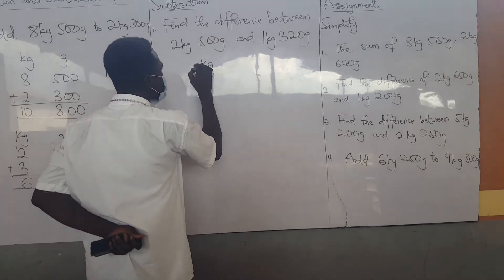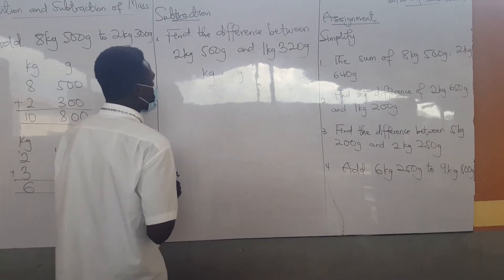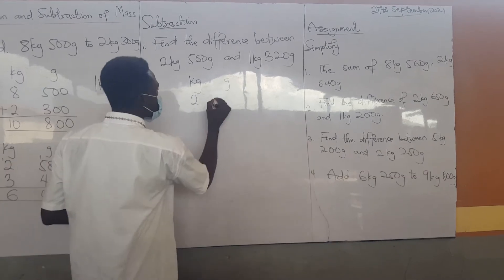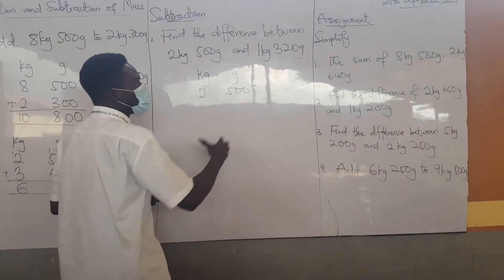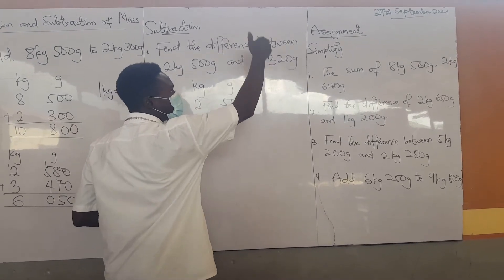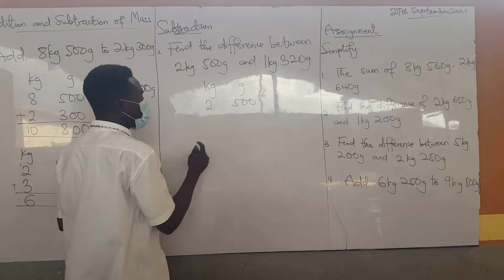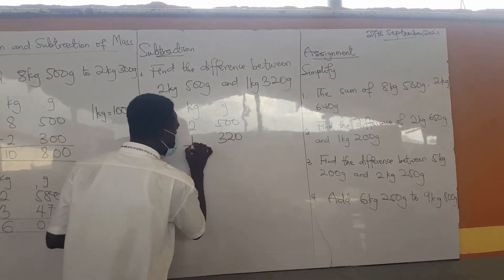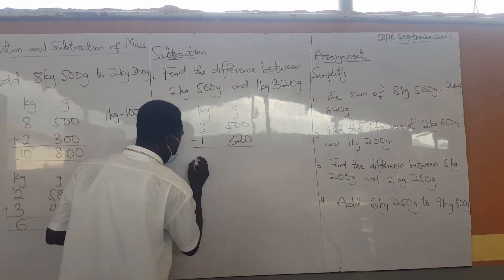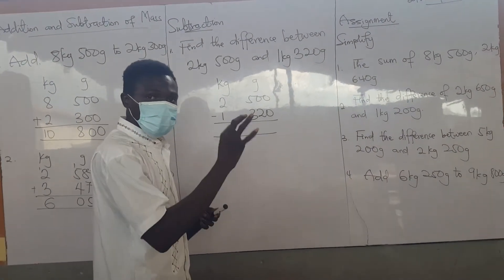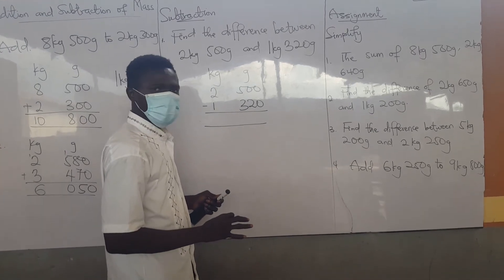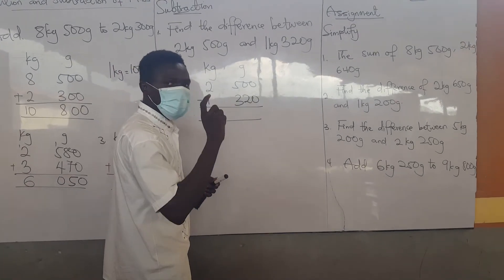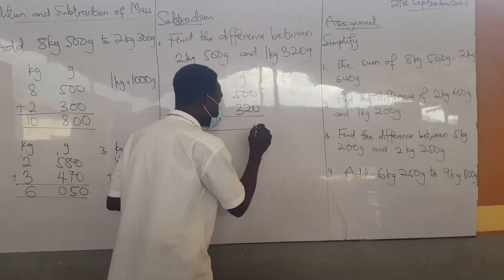I have my kilograms and grams columns. The first mass: 2 kilograms, 500 grams. Then we come here: 1 kg, 320 grams. Under kilograms I have 1, and under grams I have 320. I am subtracting, so we bring the sign to show we are truly subtracting. 0 minus 0 will give me 0.